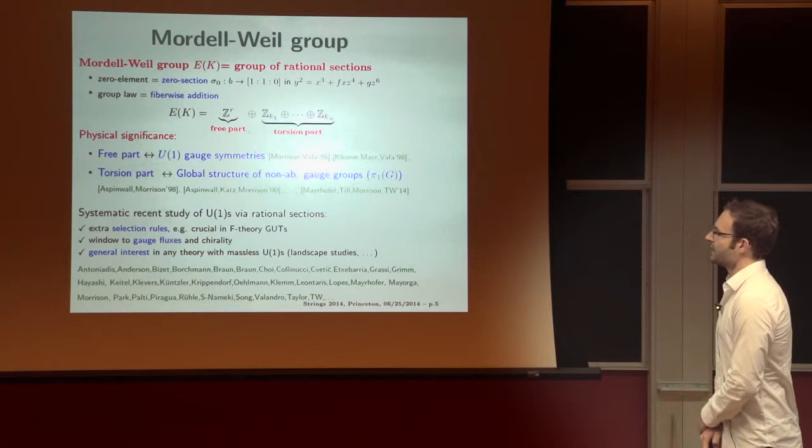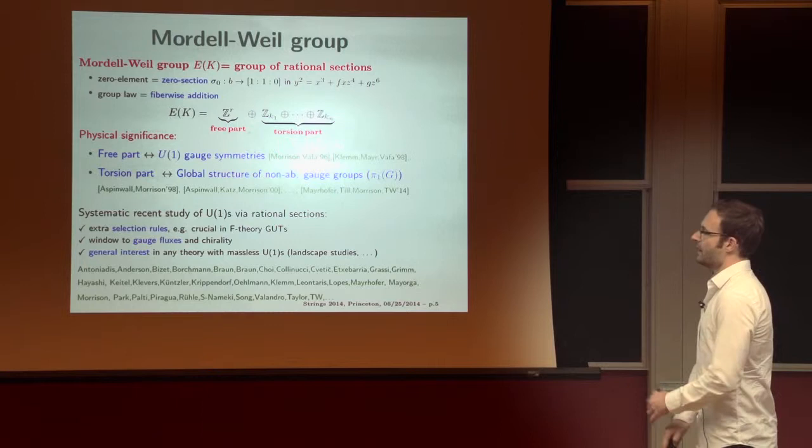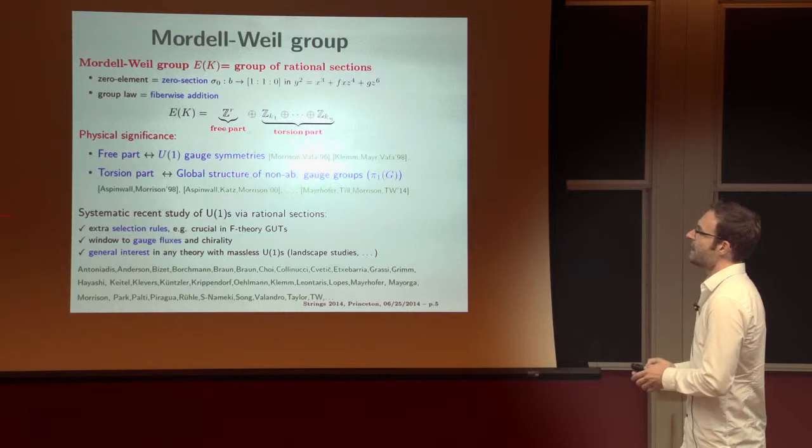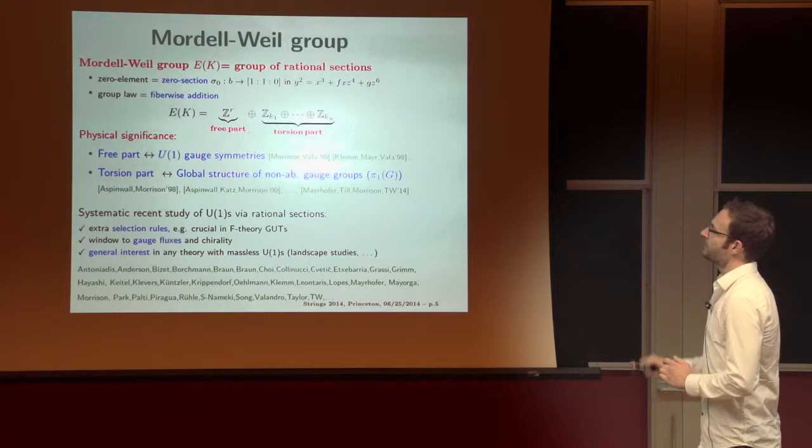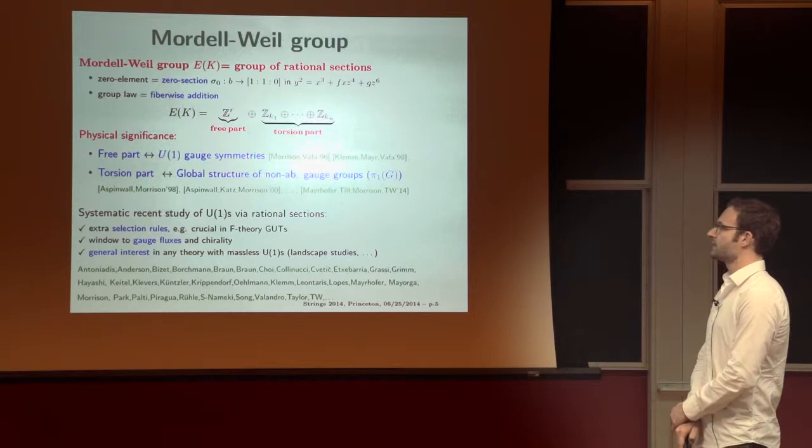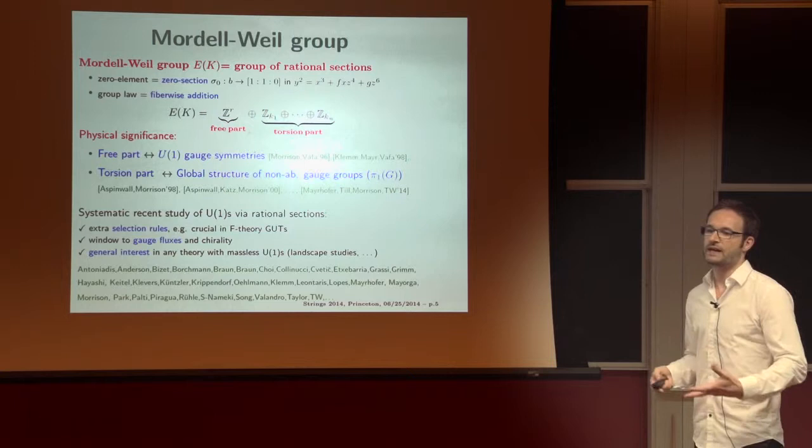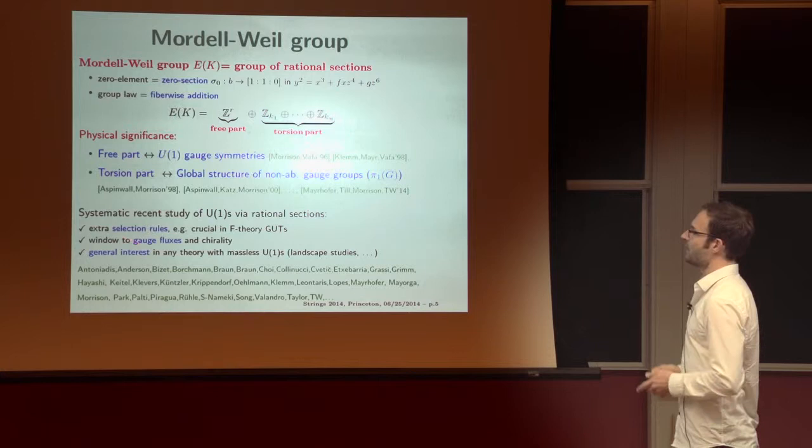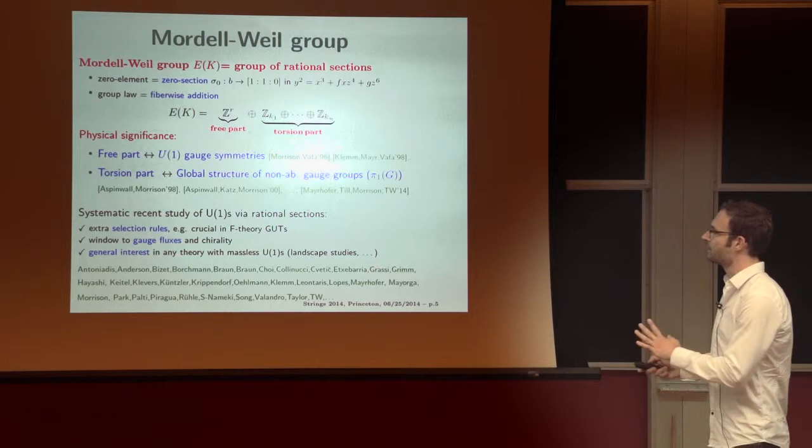Indeed, in recent years, there has been a lot of study of these U(1)s via rational sections. The motivation, again, being that they give rise to charge selection rules, which are crucial in applications. But they are also a window to gauge fluxes and chirality, a certain set of gauge fluxes. It's always very easy to describe inside models. And beyond that, they are certainly of great interest in any theory with massless U(1)s. So whenever we are interested in what is actually possible in landscape studies as such, we have to study. And this is just a collection of people who have dedicated the past years to studying these.